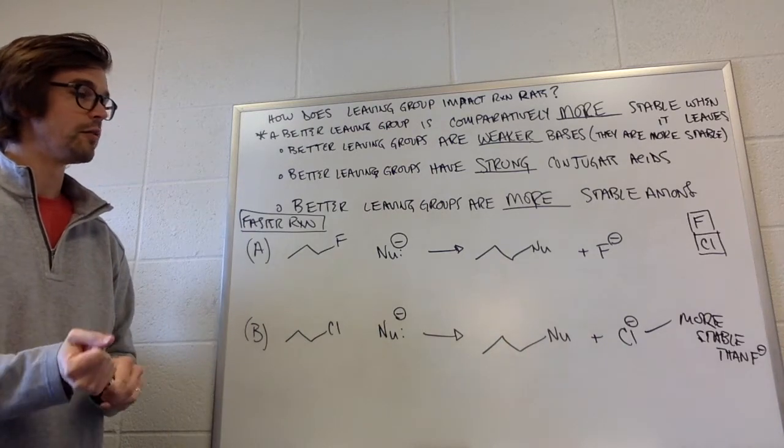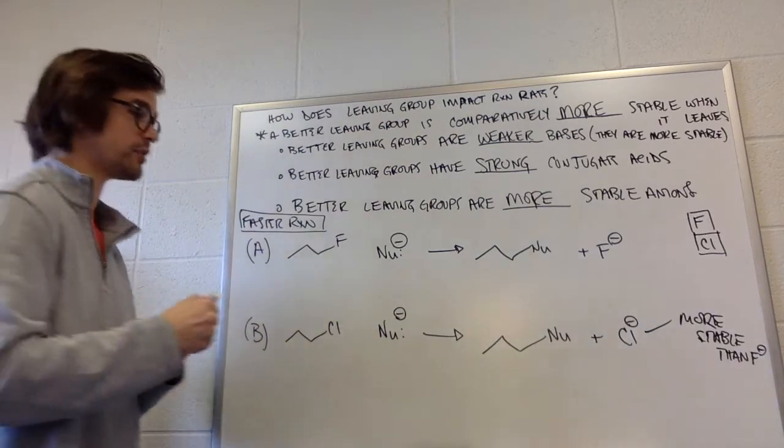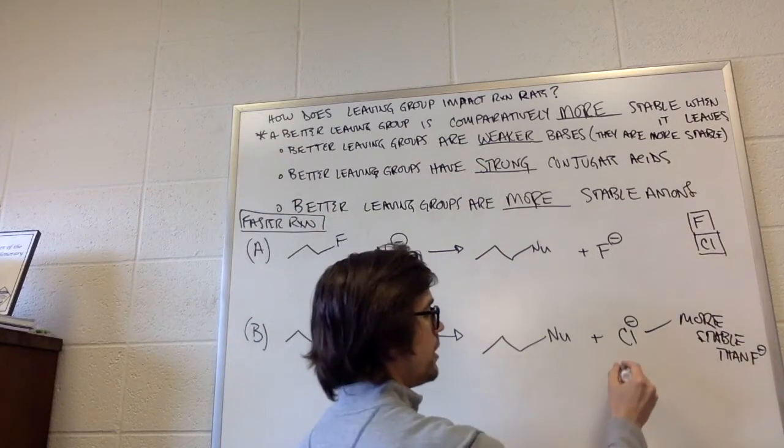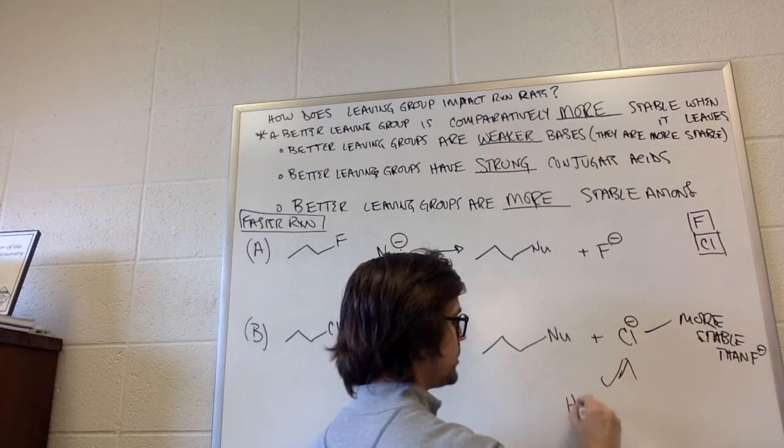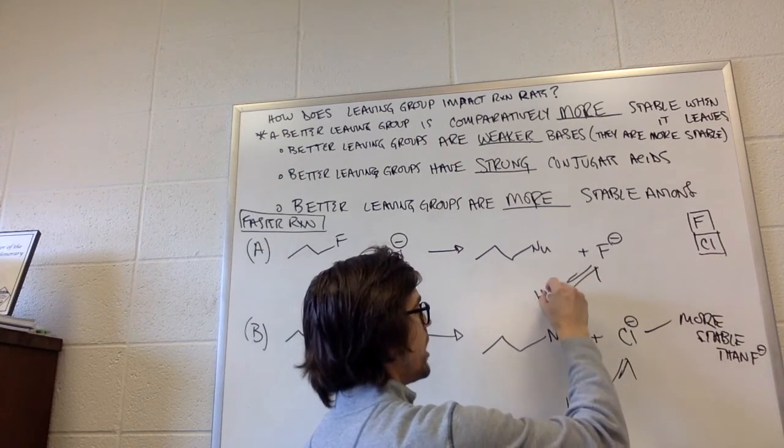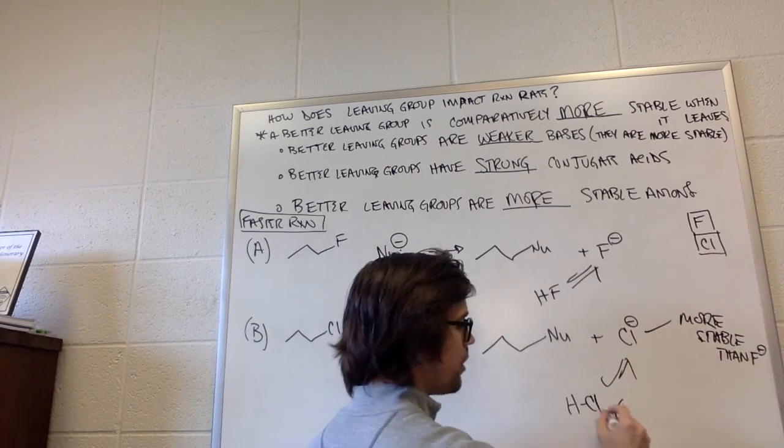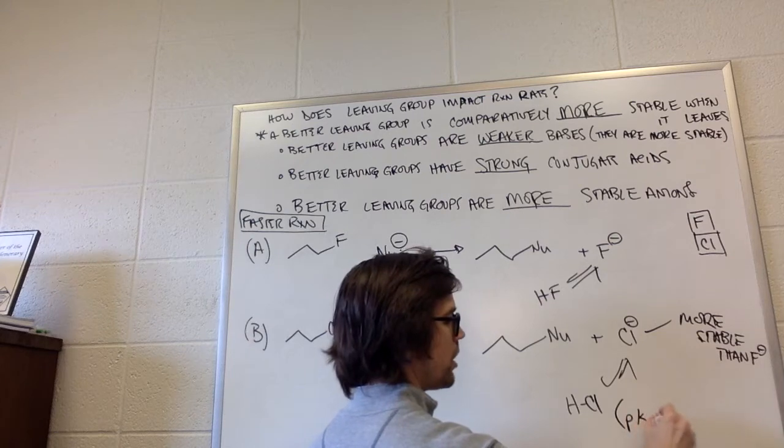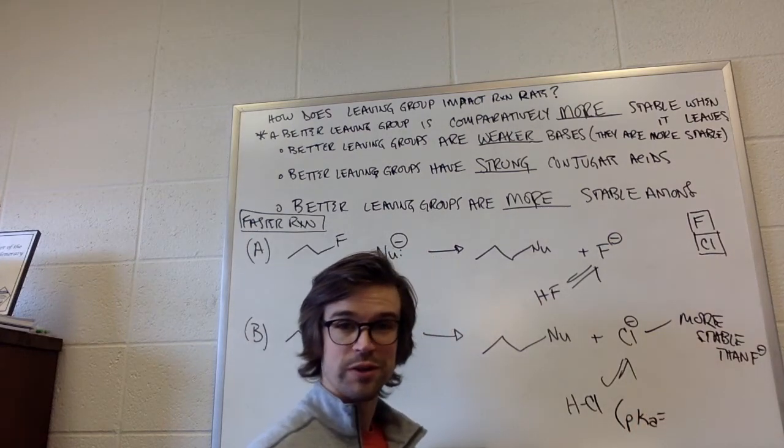We can also do the same rationalization as far as their base strength as we did previously. So this would come from HCl and this would come from HF. Our problem here is that we do know this pKa. It was on the chart. What's the pKa? You should be able to tell me.